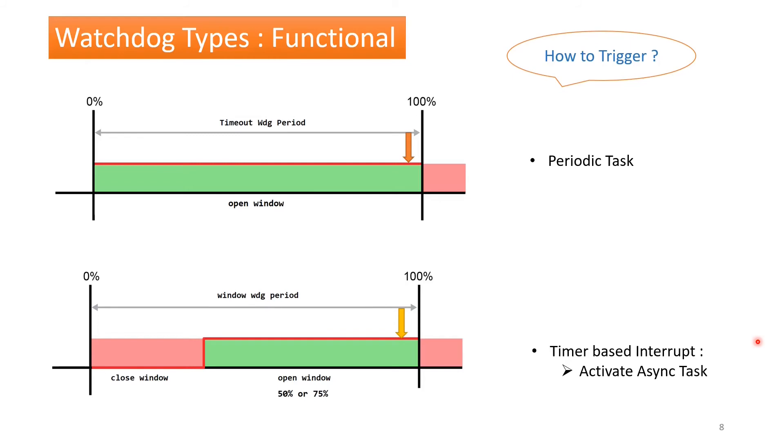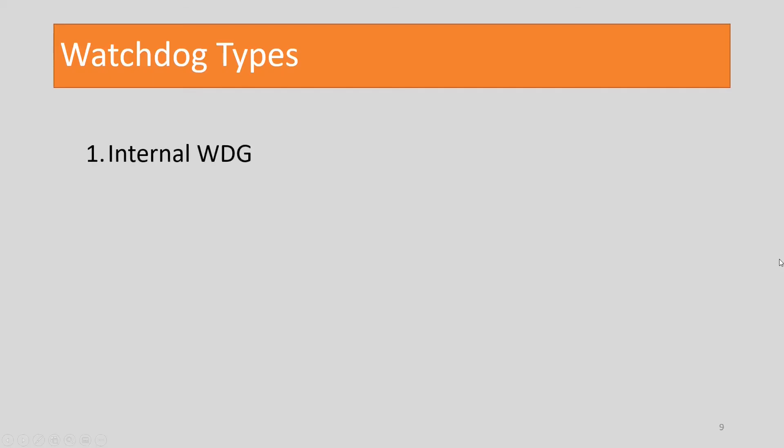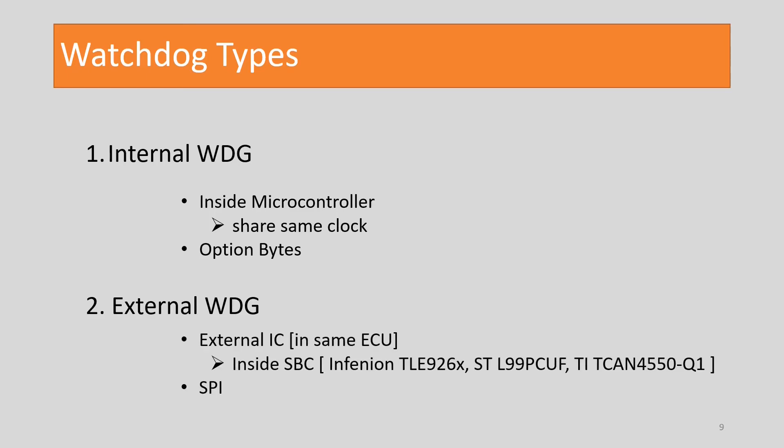From a hardware perspective, watchdogs are of two types. The first one is internal, second is external. The internal watchdog is sitting inside the microcontroller and using the same clock as the CPU clock. Settings of the watchdog can be done by choosing option bytes. Internal trigger can be done by updating the watchdog register value, and the reset is generated by jumping to the reset address by the hardware.